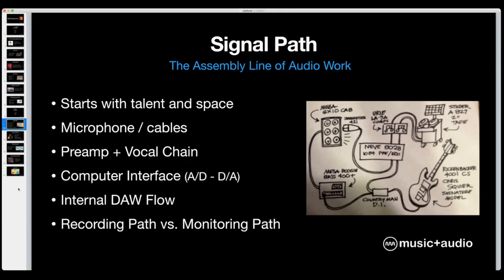Every DAW has its own different way of handling signal path and signal flow — find that by looking up the documentation for that particular DAW. One I suggest even if you're not using it is Reaper at Reaper.fm — a full-fledged DAW that's freely available to try. A personal license is only about 60 dollars, so it's very affordable. The documentation has a full breakdown of the way the signal path works in it, and it's very useful to check out just to understand how signal path works within a DAW.